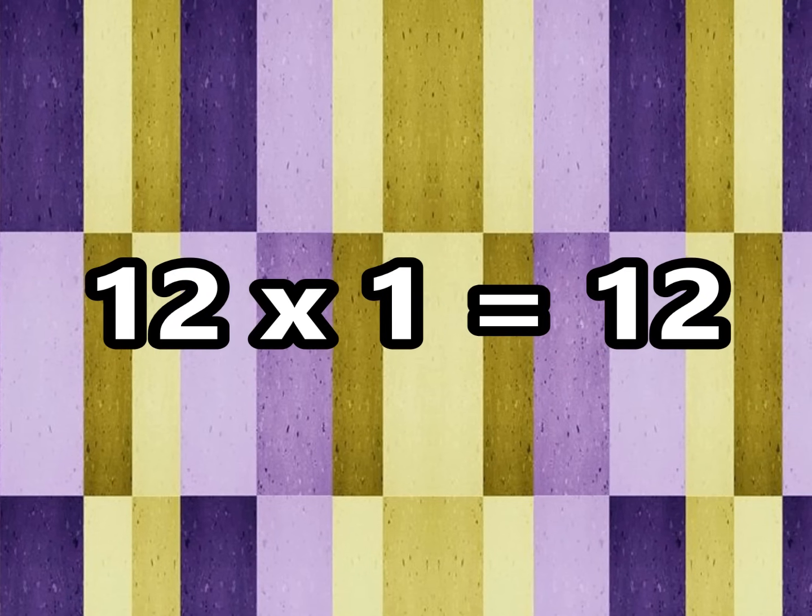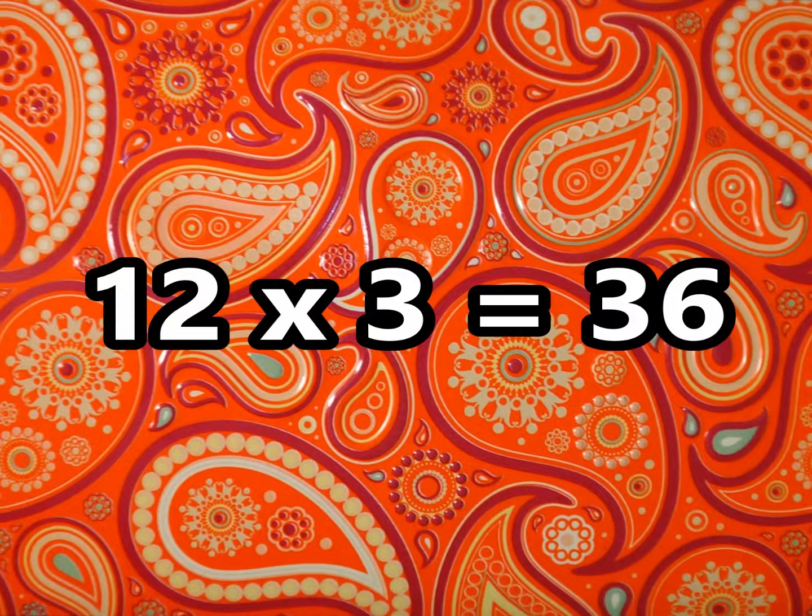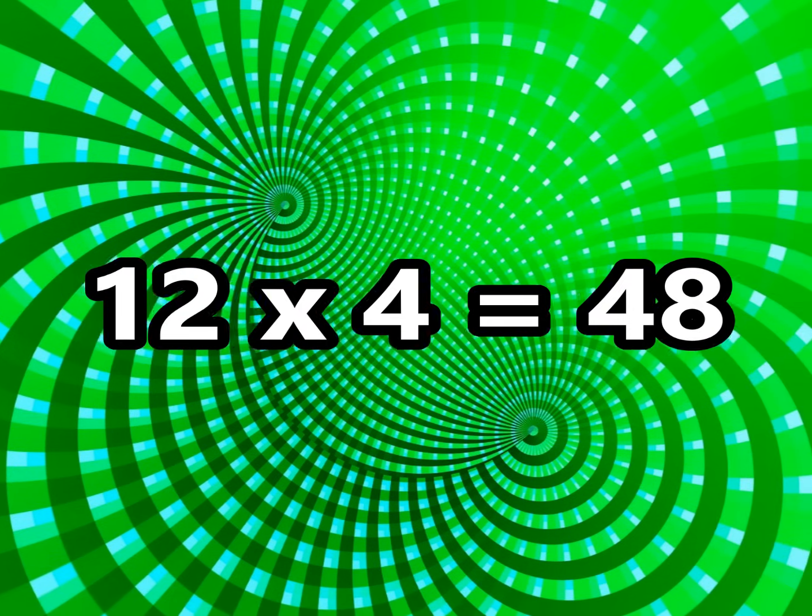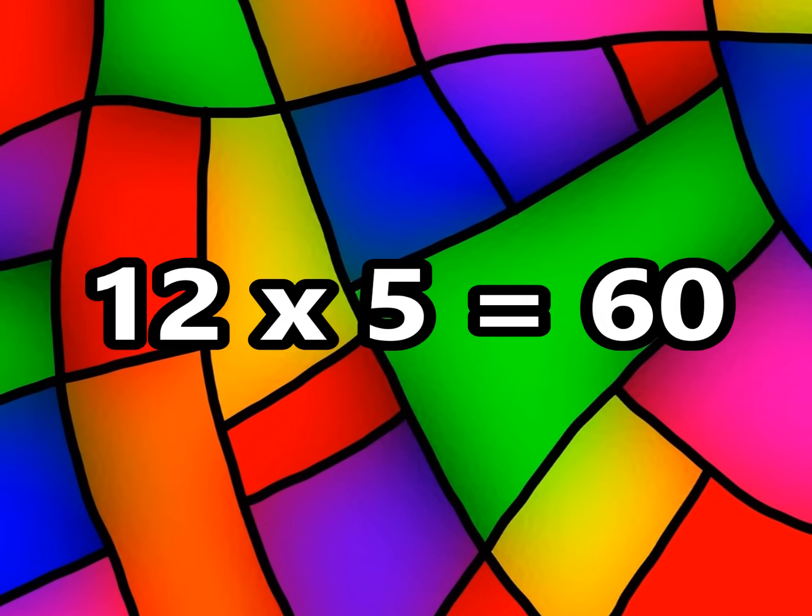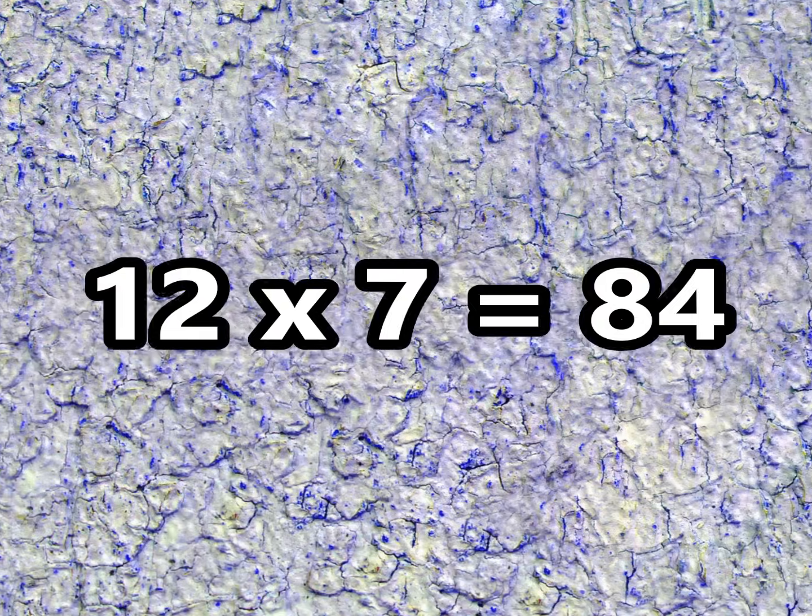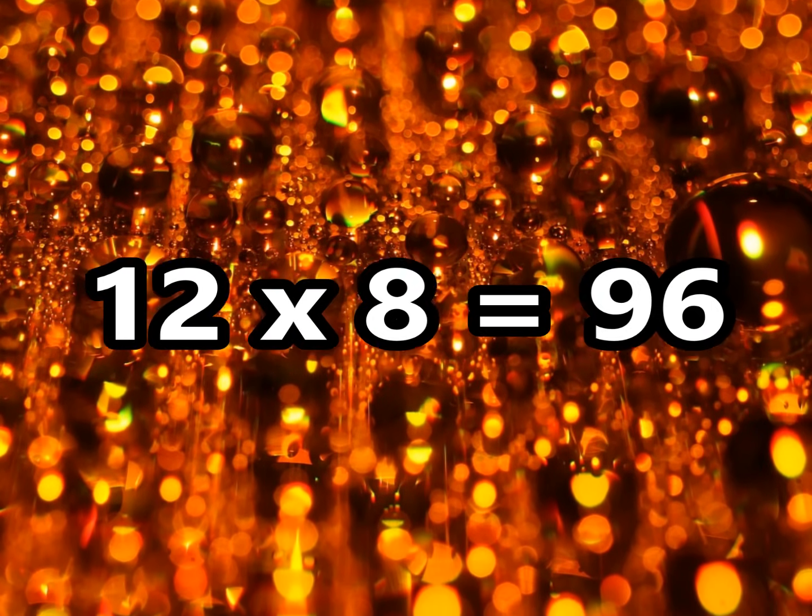12 times 1 is 12, 12 times 2 is 24, 12 times 3 is 36, 12 times 4 is 48. 12 times 5 is 60, 12 times 6 is 72, 12 times 7 is 84, 12 times 8 is 96.